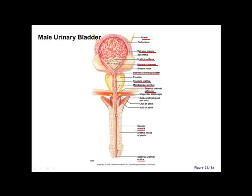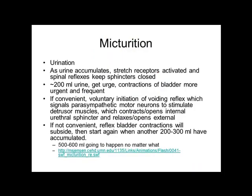Micturition: as urine accumulates, about every 200 ml the bladder stretches and you feel the urge to urinate — the bladder contracts slightly against the fluid. If it's not an opportune time, you can hold it. Another 200 ml comes in and the bladder contracts again. Once you reach about 600–700 ml, you essentially have to urinate no matter what.